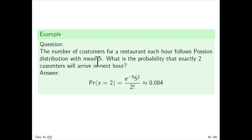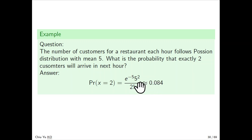The number of customers for a restaurant per hour follows a Poisson with mean 5. What is the probability that exactly 2 customers arrive in the next hour? The mean is 5, so lambda is 5. So it's e to the negative 5, times 5 squared, divided by 2 factorial, which gives approximately 0.084.